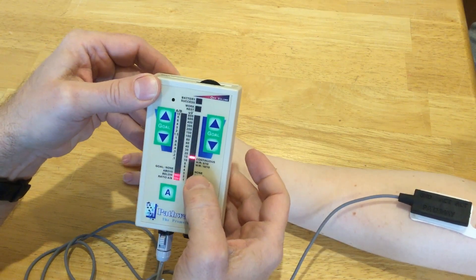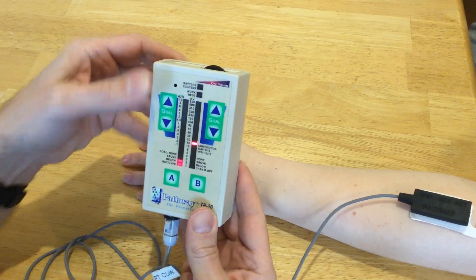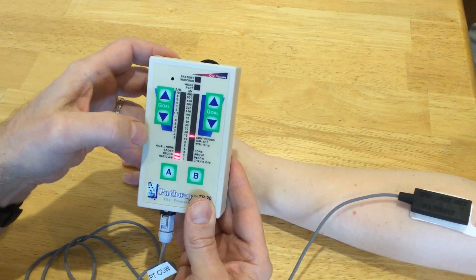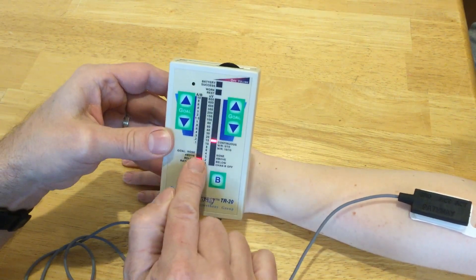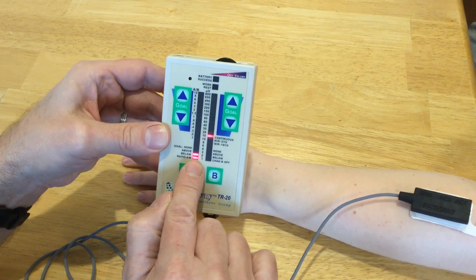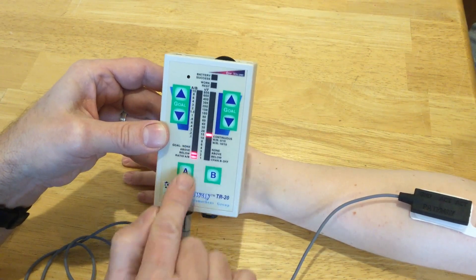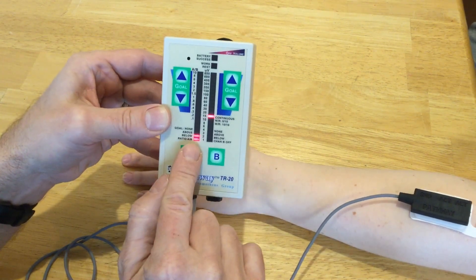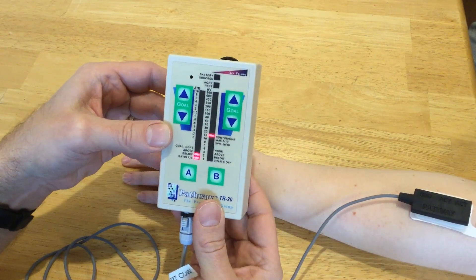There was nothing set for channel B. Channel A does not have a goal right now, and these little red lines right here on channel A, which is what we're hooked up to, is showing the electrical activity that it's sensing.